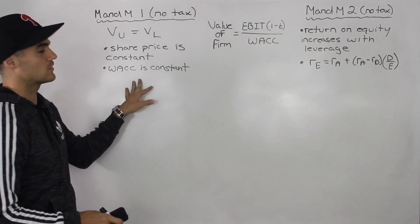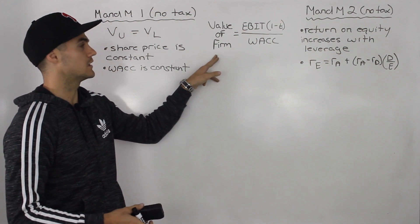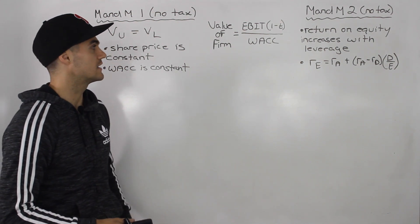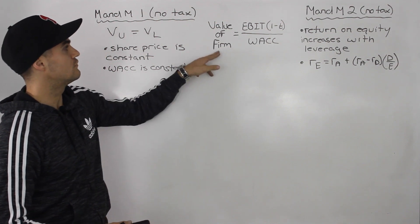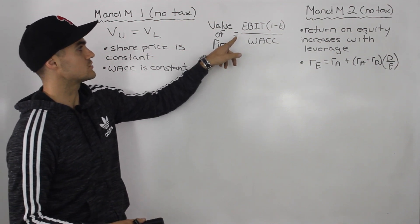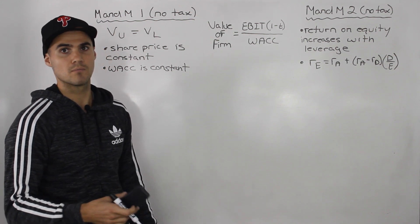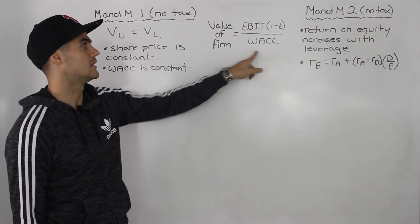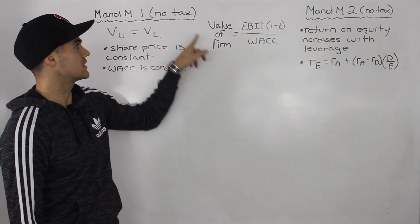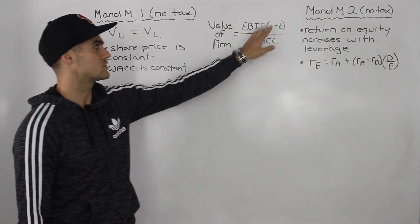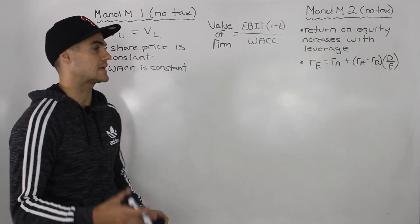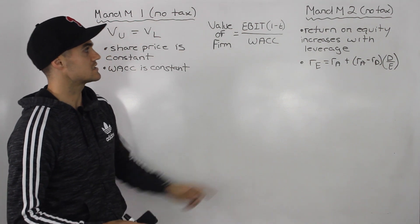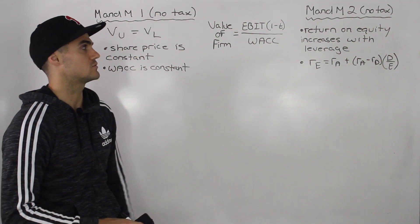In that same video I also introduced this super useful formula that we're going to continually use in this chapter — we're actually going to be using it in this video as well. The value of a firm is always equal to the earnings before interest and taxes times (1 minus t), all over the weighted average cost of capital. Since we're dealing with the no tax case, you can forget about the (1 minus t) for now, but further on in the chapter when we deal with taxes, that (1 minus t) will have to be there.